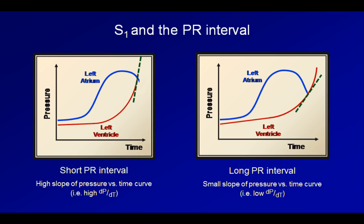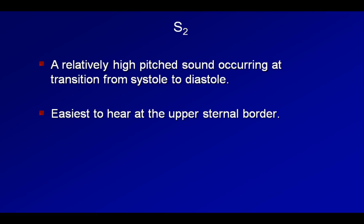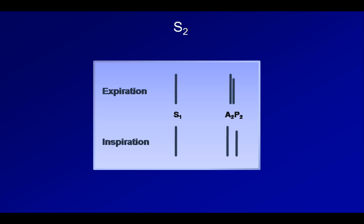Let's now talk about S2. To remind you, S2 is a relatively high-pitched sound occurring at the transition from systole to diastole. It is easiest to hear at the upper sternal border, and it is normally split during inspiration. This means that the contributions to S2 from the aortic and pulmonic valves are not simultaneous. Here is a schematic of the normal heart sounds, including the splitting of S2 during inspiration. The individual components of S2 are named A2 for the sound originating from the aortic valve, and P2 for the sound originating from the pulmonic valve. Take a listen.